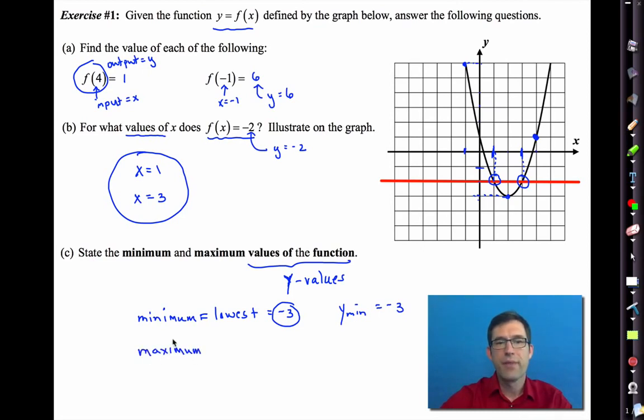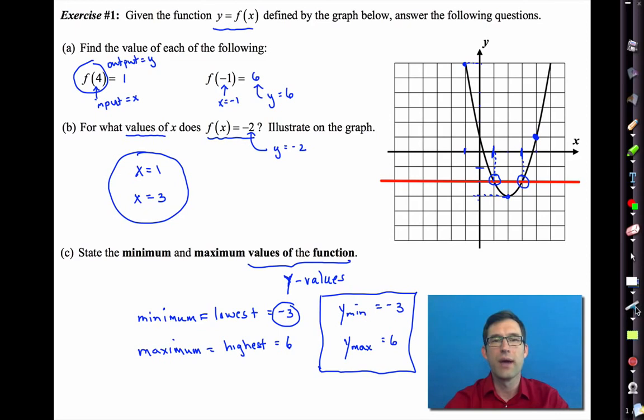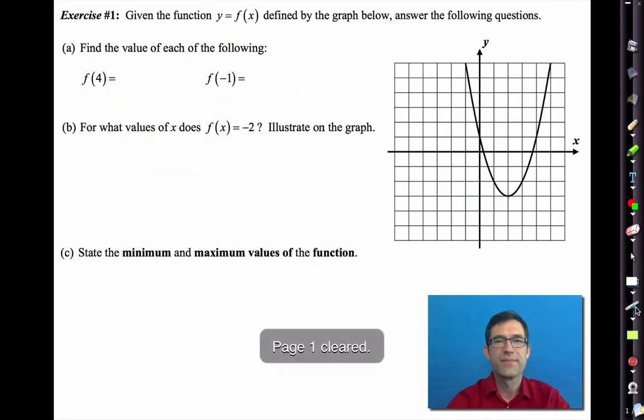So then we might even write it like this: Y with a little subscript, min equals negative 3. The maximum value, the highest value. Well, let's see. That comes right at the top here. And we already counted up that. That was 6. So we might say that y sub max equals 6. There they are. I think the trickiest thing about this, though, is the idea that the values of the function are the outputs or the y values.